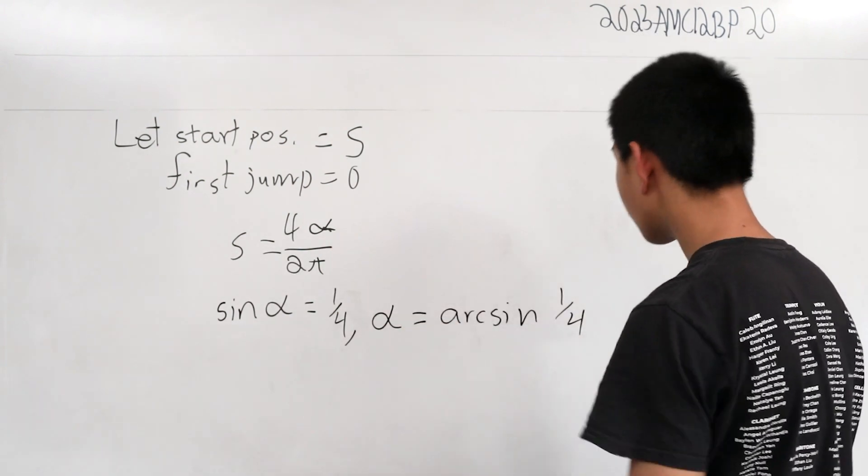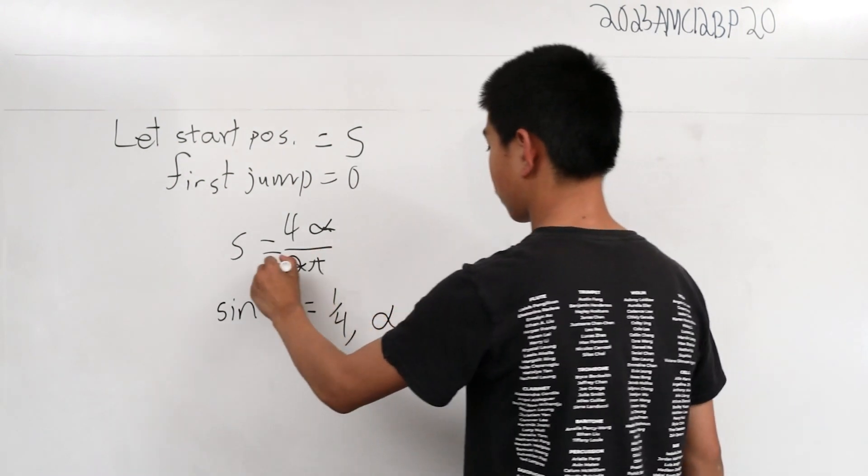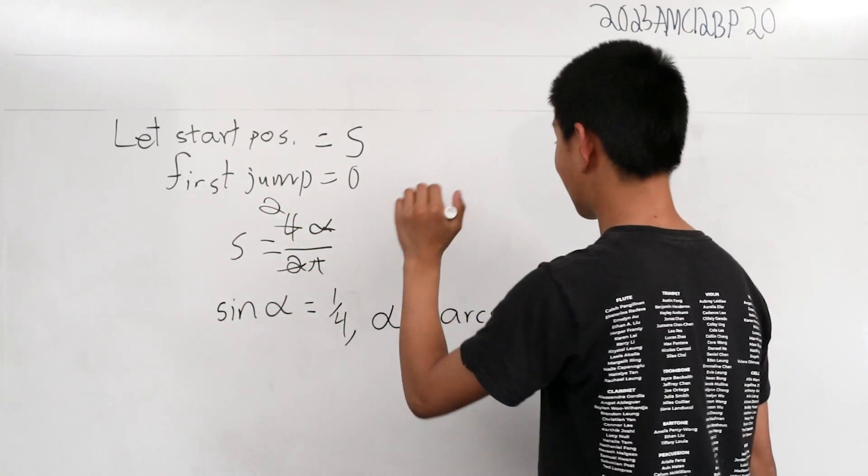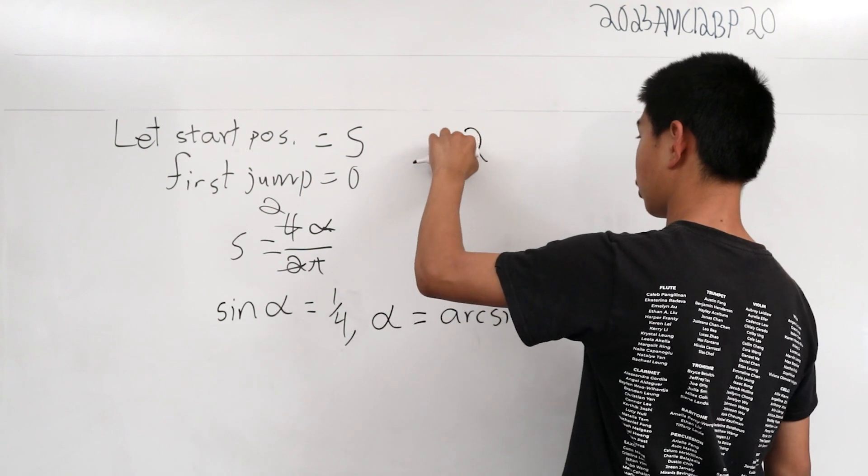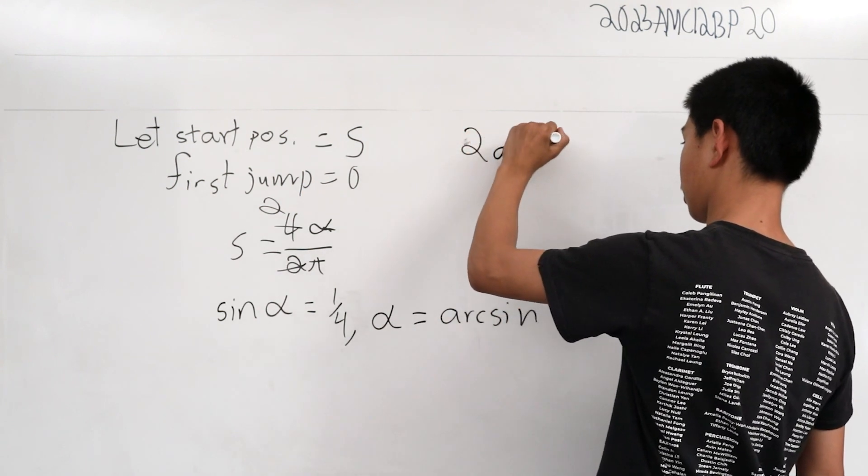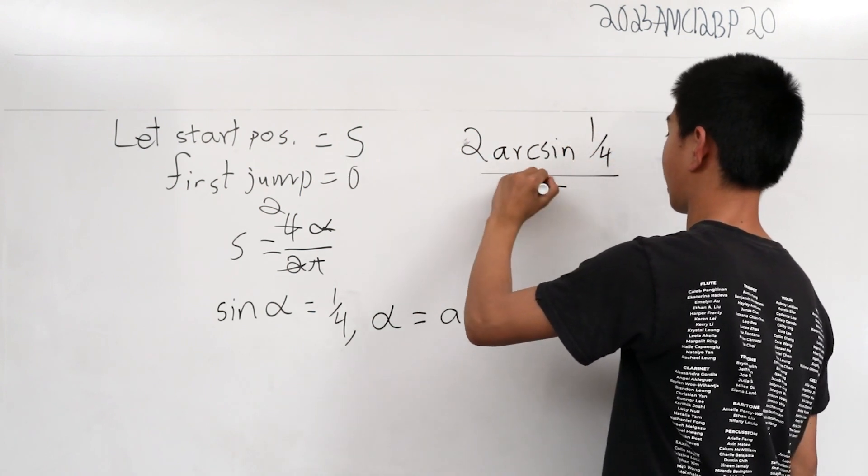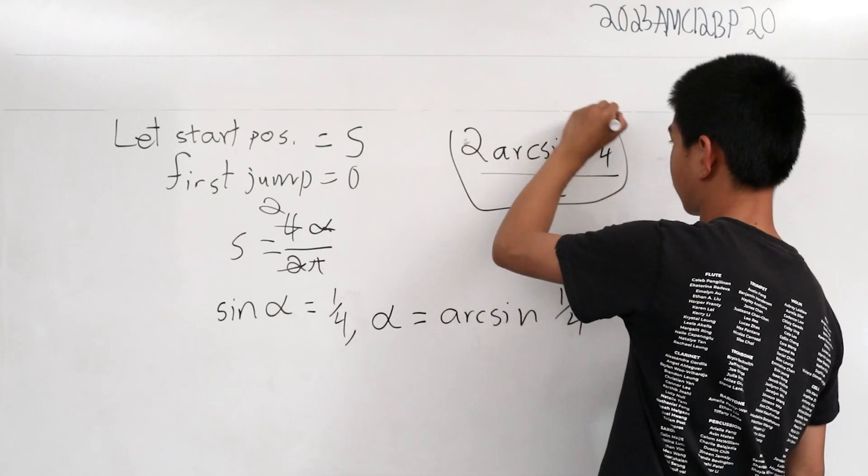so we can plug it in here. The twos and four cancel out. So this is two of the omega, which is arc sine one-fourth over pi. So this is two arc sine of one-fourth over pi. That is our answer for this problem.